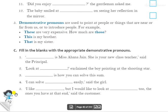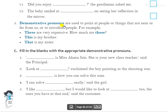Good morning students, welcome to your English class. Today we will continue our chapter on pronouns. Now let's come to the fifth one: demonstrative pronouns. Demonstrative pronouns are used to point at people or things that are near or far from us, or to introduce people.